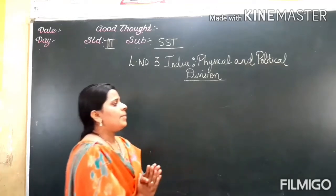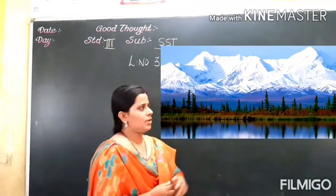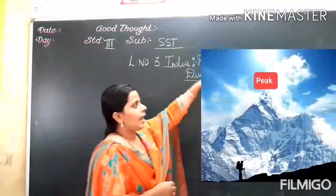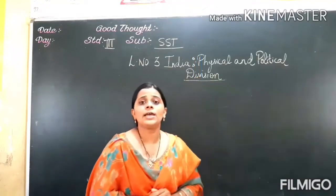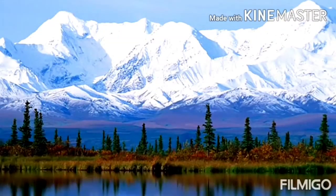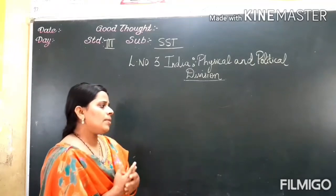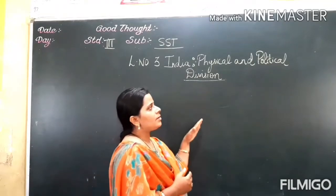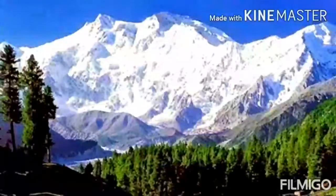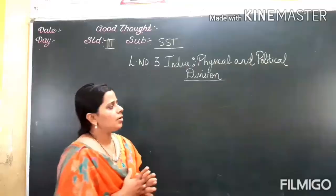There are many peaks in this mountain range. You know what a peak is? It is the pointed part of the mountain. You will see many peaks here in the Himalaya range. The peaks of the Himalaya range are covered by snow throughout the year — snow meaning ice.